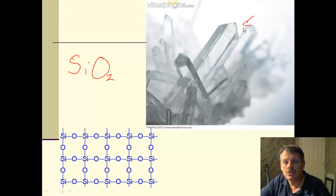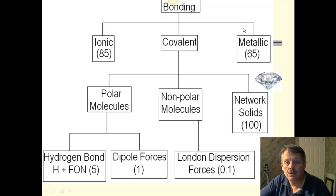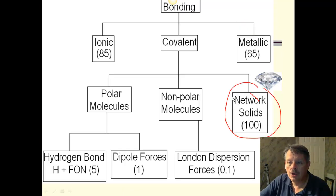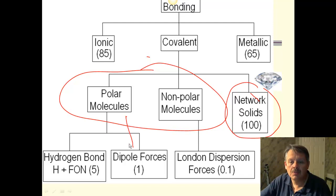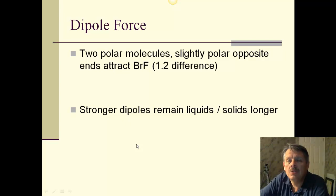Those are network solids. And those are the very hardest things that we can make on Earth. They hold together really, really hard. Okay. So, now that leaves, under covalent, that leaves polar and non-polar molecules. Well, you know what polar and non-polar molecules are. We've talked about them in the past. So, we're going to separate out polar molecules from non-polar. And specifically, we're going to talk about things that have dipole forces between them. So, if we have something that is a polar molecule, meaning it has a slightly positive and slightly negative end. And you can go back and look at your electronegativity table for this.